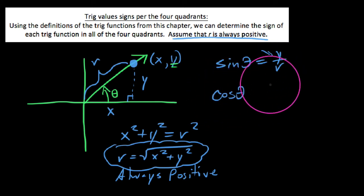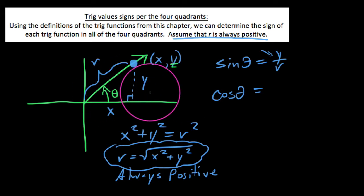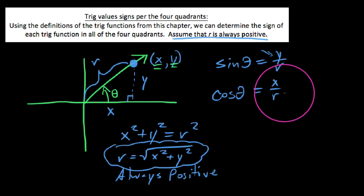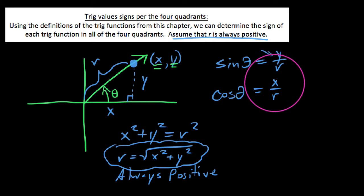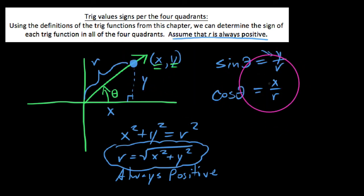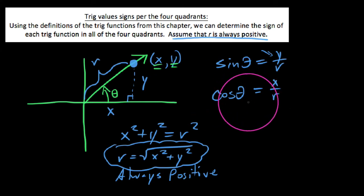Likewise, if we talk about cosine — cosine is adjacent over hypotenuse — in this case, that's the x value of the point divided by r. R is always positive, so when would cosine be negative? It would have to terminate where the x value is negative. If the x value of the point is negative, then we'd have a negative divided by a positive, and the overall value of cosine would be negative.